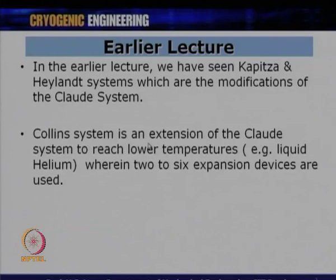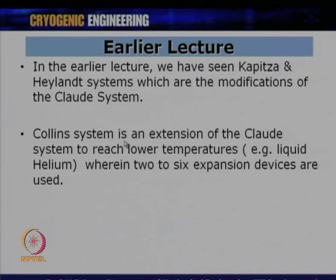We then went to the Collins system, which is an extension of the Claude system to reach lower and lower temperatures — for example, liquid helium temperatures of around 4.2 Kelvin — wherein two to six expansion devices are used. The Collins system basically uses more than one expansion device, which is a modified Claude system.